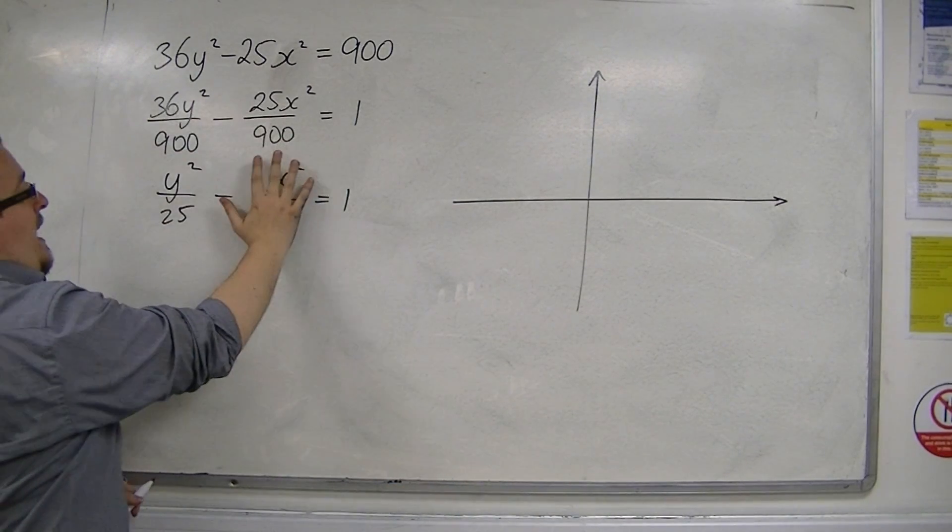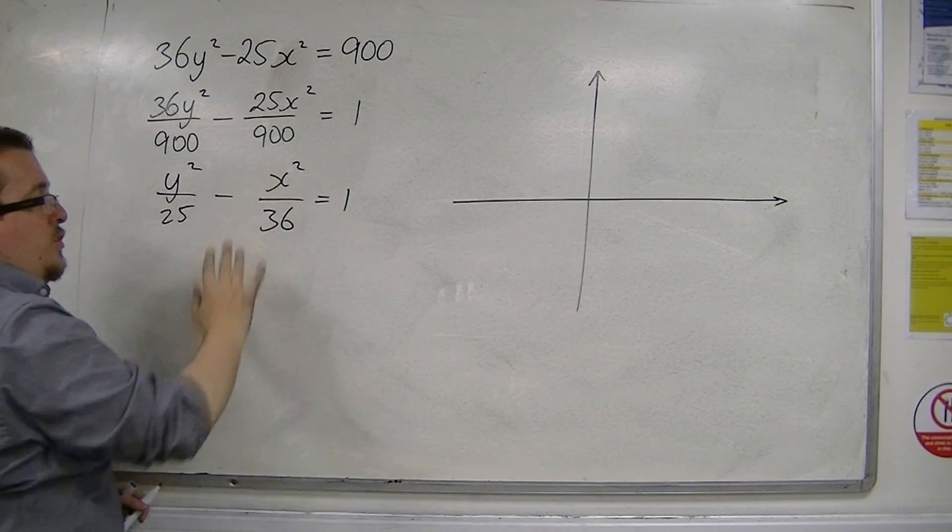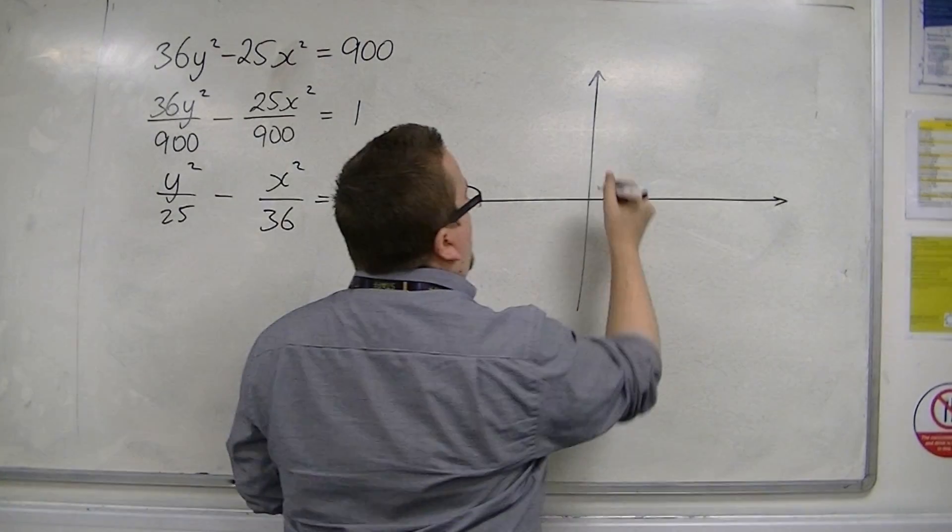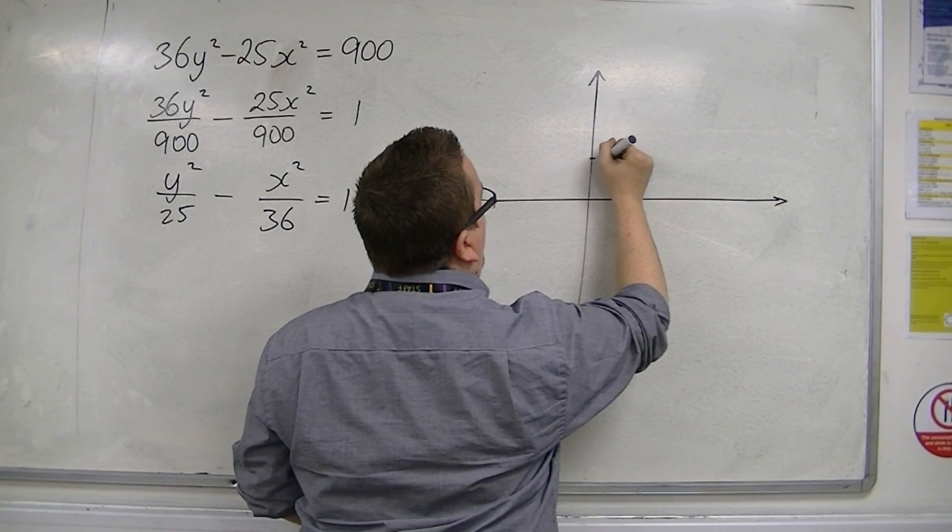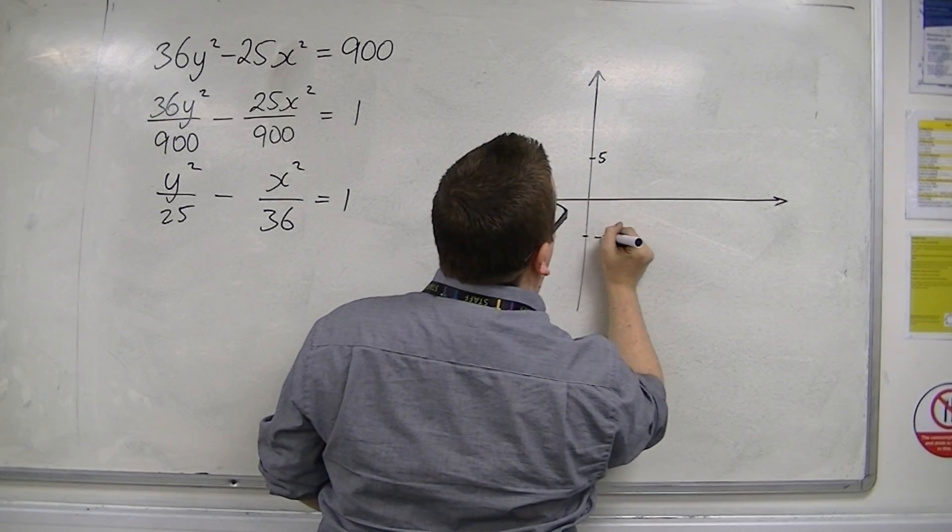So when x is 0, y is going to be plus or minus 5. There's 5, and there's minus 5.